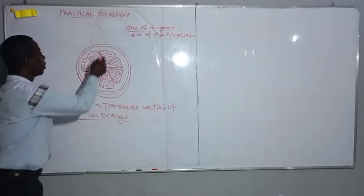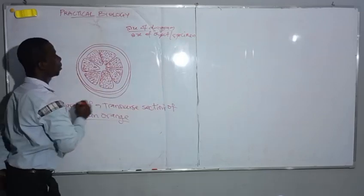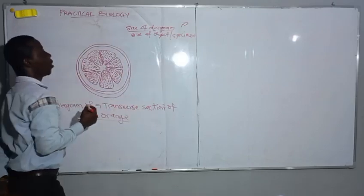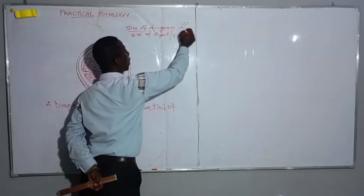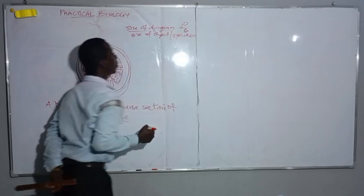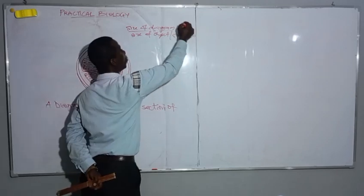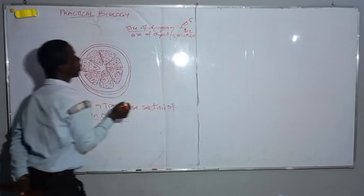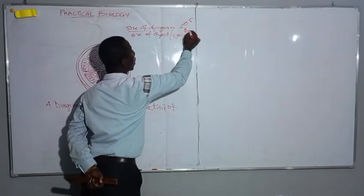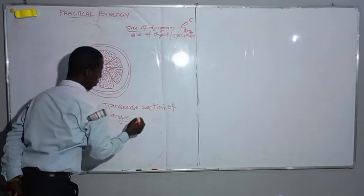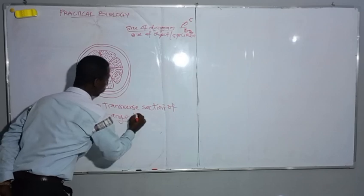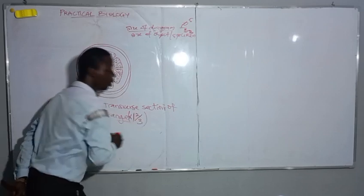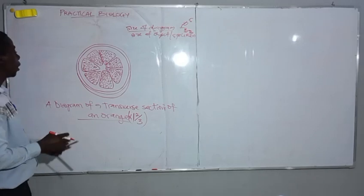So let's assume our diagram is 10 cm and our orange is 8 cm. We divide: 10 over 8, which gives us 1.25. That is our magnification. Now for labelling.